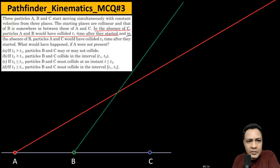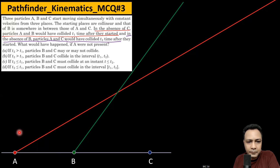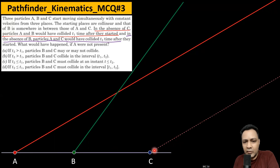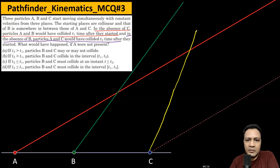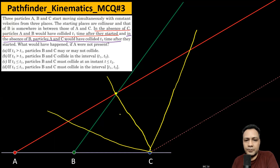The second condition: in the absence of B, A and C would have collided t2 time after. For the collision of A and C, I draw a line parallel to the line of motion of A. For A and C to collide, C should move to the left of this line so that trajectories intersect. A few possible trajectories of C are shown — C can move in various directions. If collision happens at the same point where A and B collided, then t1 equals t2.